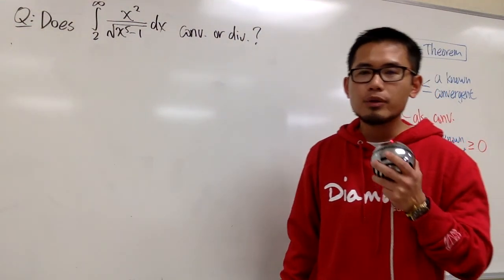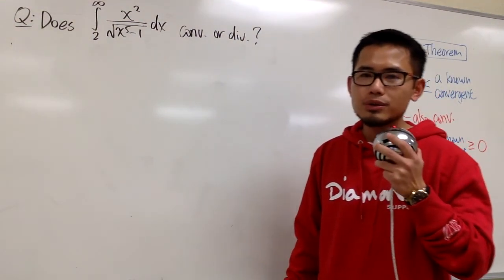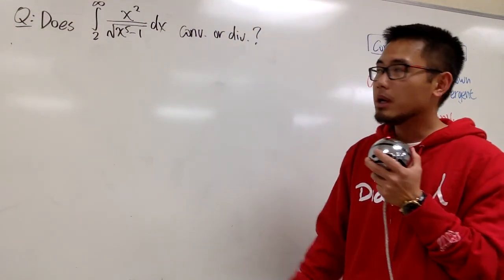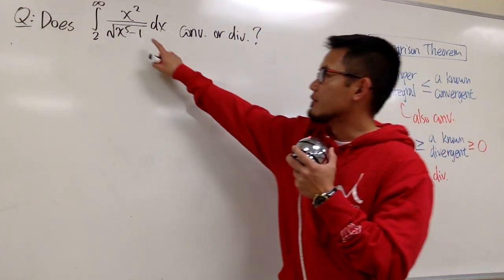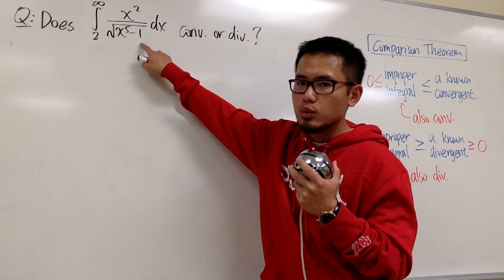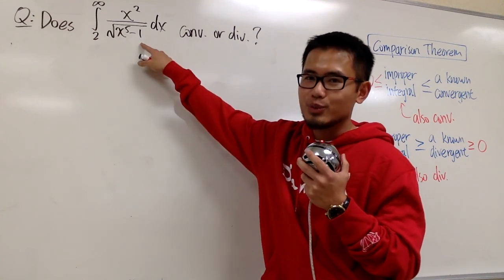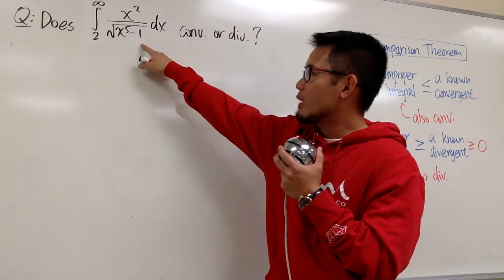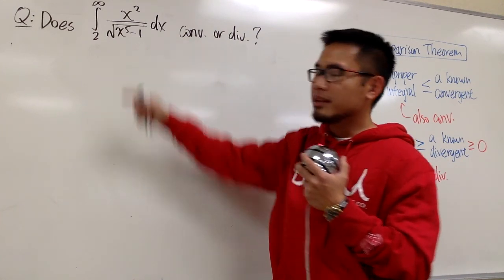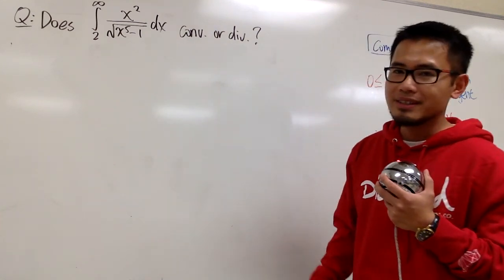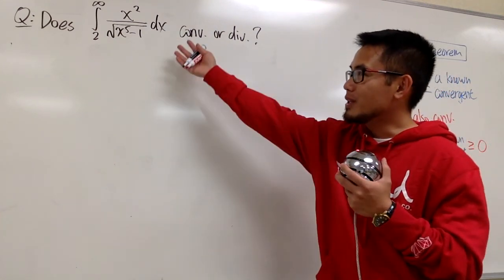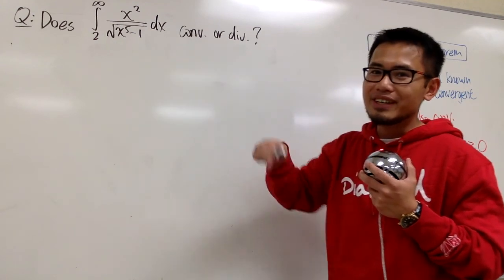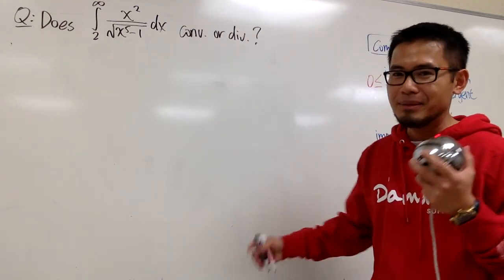Here's another example where we'll use the comparison theorem to determine if an improper integral converges or not. We will not be integrating this directly. If you know how to integrate that, leave a comment below and let me know.